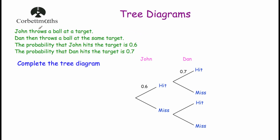So let's have a look at our first question. John throws a ball at a target, and then Dan throws a ball at the same target. The probability that John hits the target is 0.6, and the probability that Dan hits the target is 0.7, and we've been asked to complete the tree diagram. The tree diagram has our two events: John throwing the ball at the target, and then Dan throwing the ball at the target.